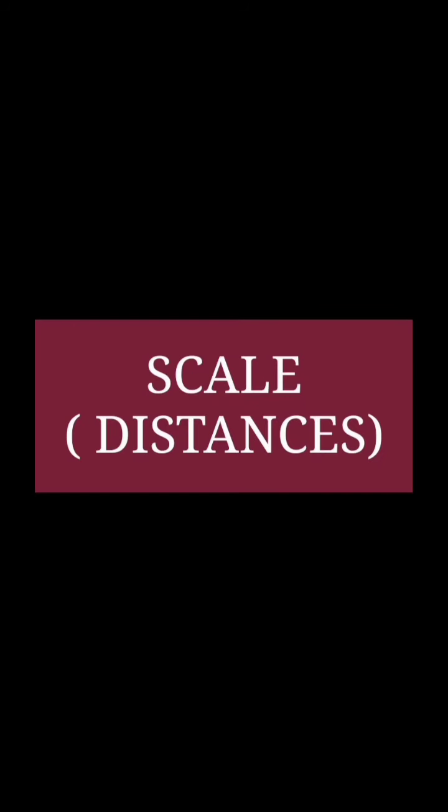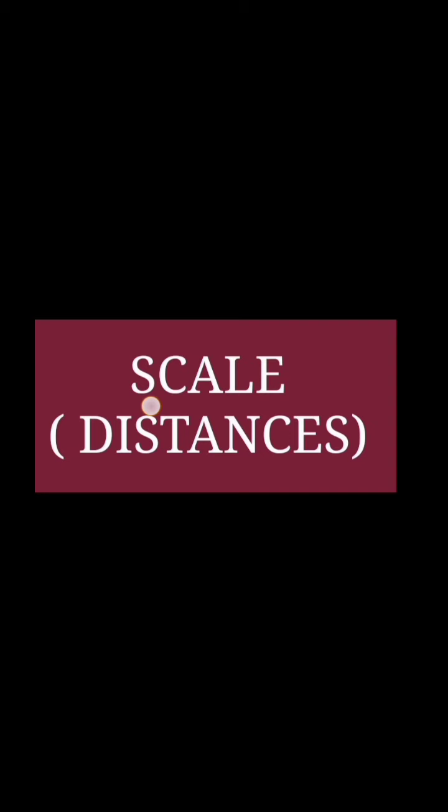Next topic is scale. Suppose we know the actual distance on the ground between any two places, but we can't show the same distance on the map because the map shows smaller distances. There is a ratio between the distance on the map and the actual distance on the ground. This ratio is known as the scale of the map, and it is generally mentioned in the corner of the map.